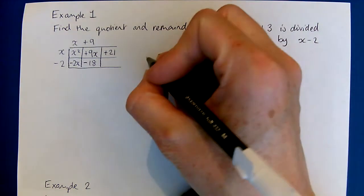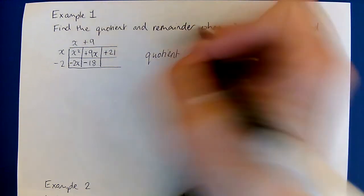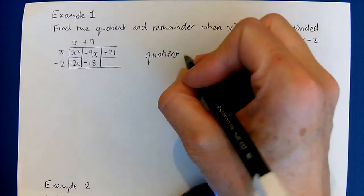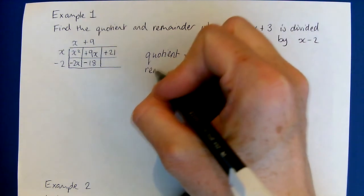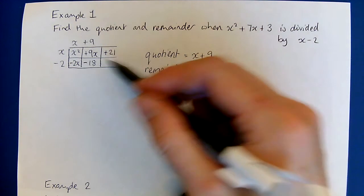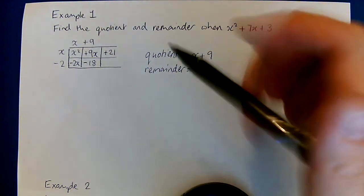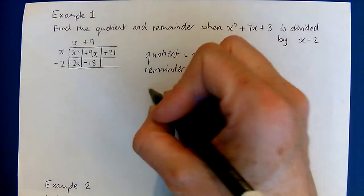There's nothing that I can multiply x by to make plus 21 except a fraction, so that means that this is our remainder. The quotient is the answer when we've done the division, which is x plus 9, and the remainder is the leftover bit, so that is 21.